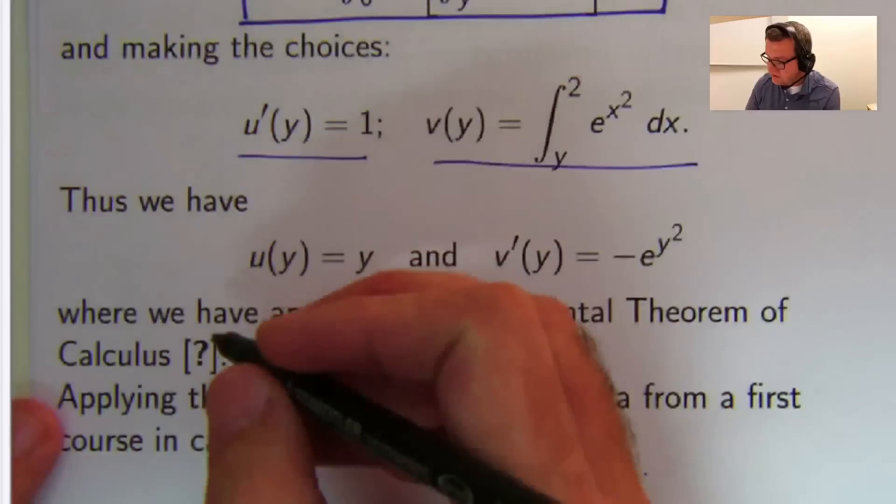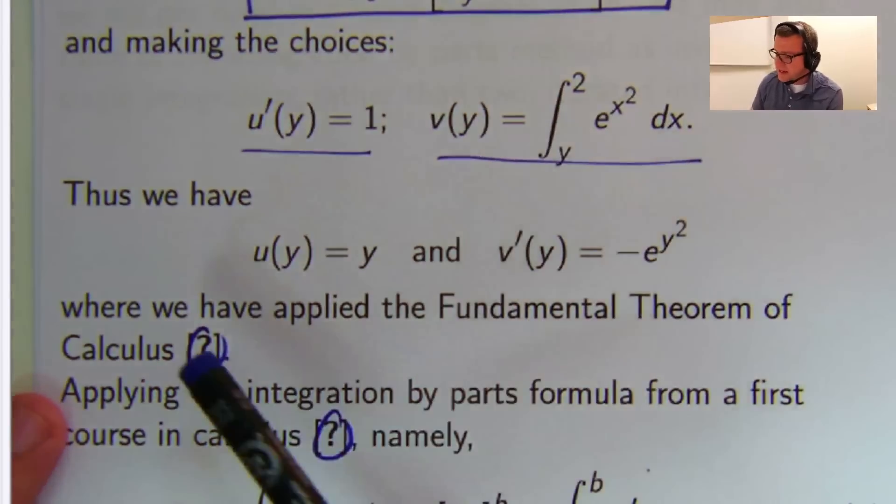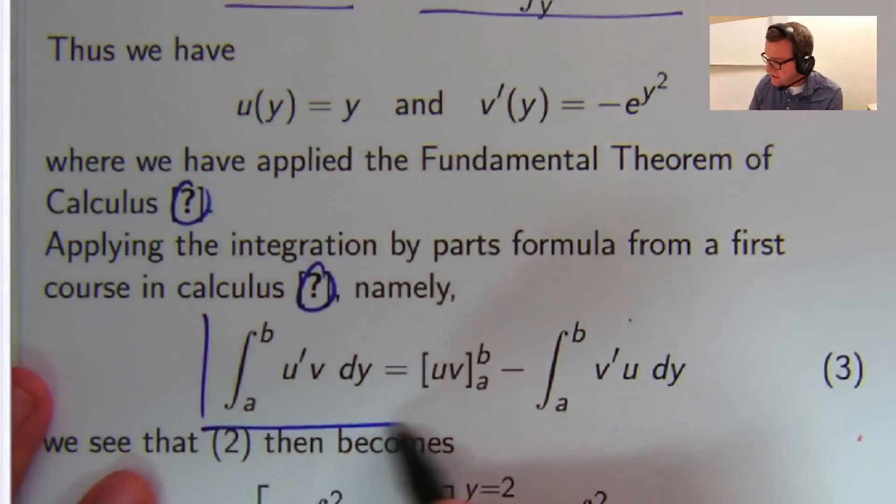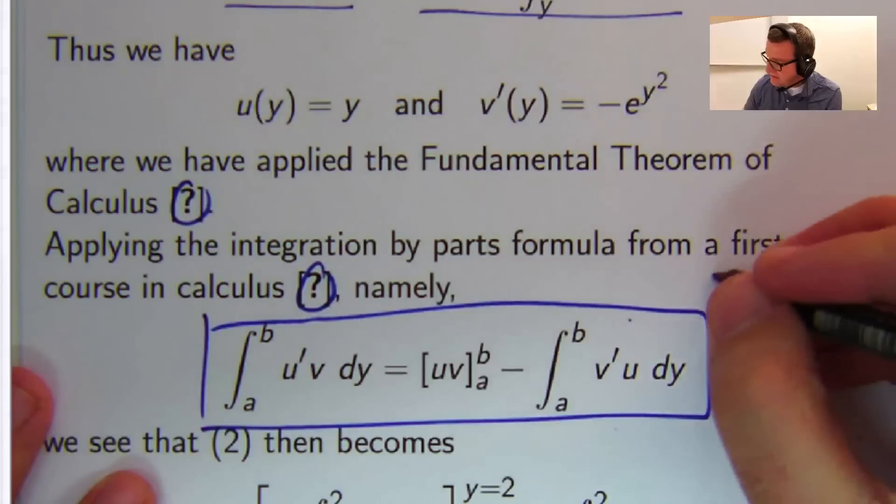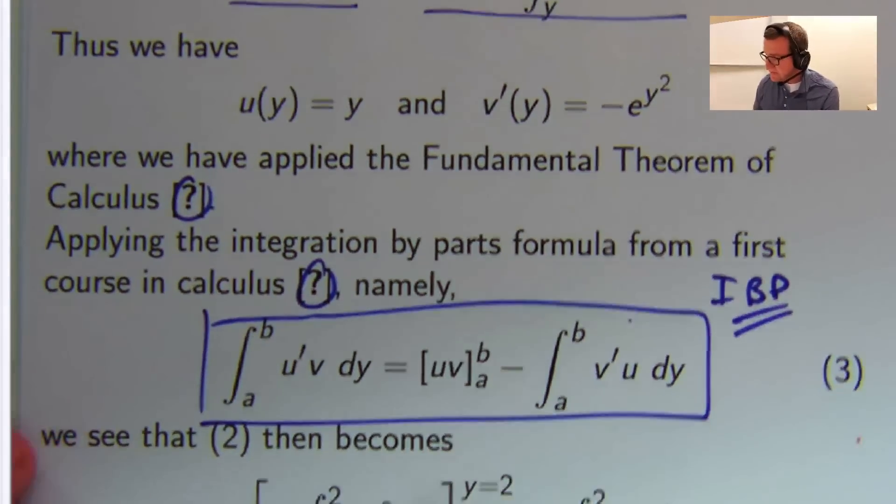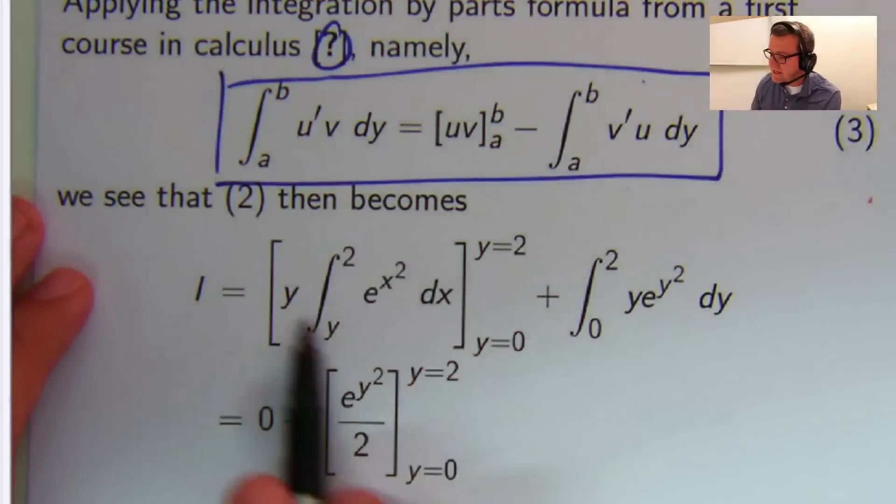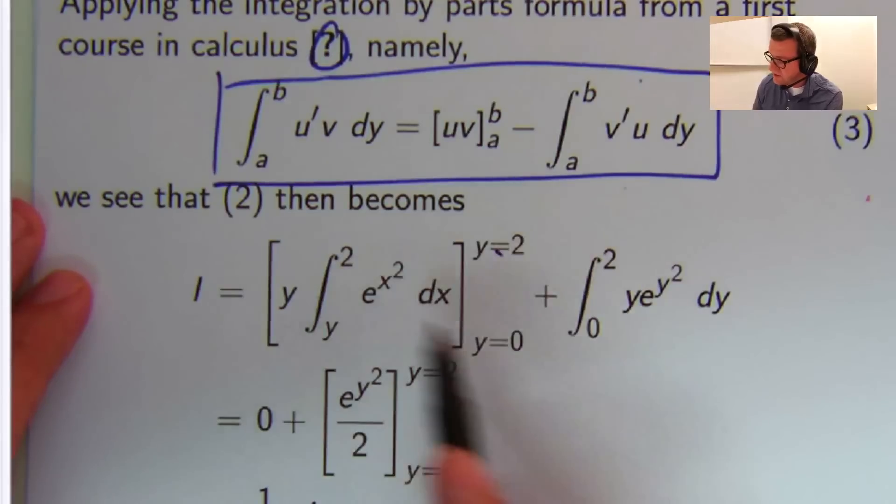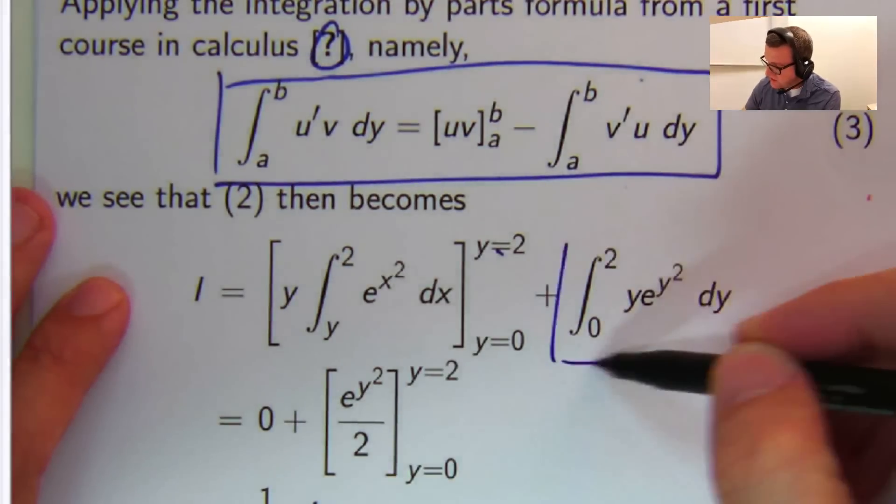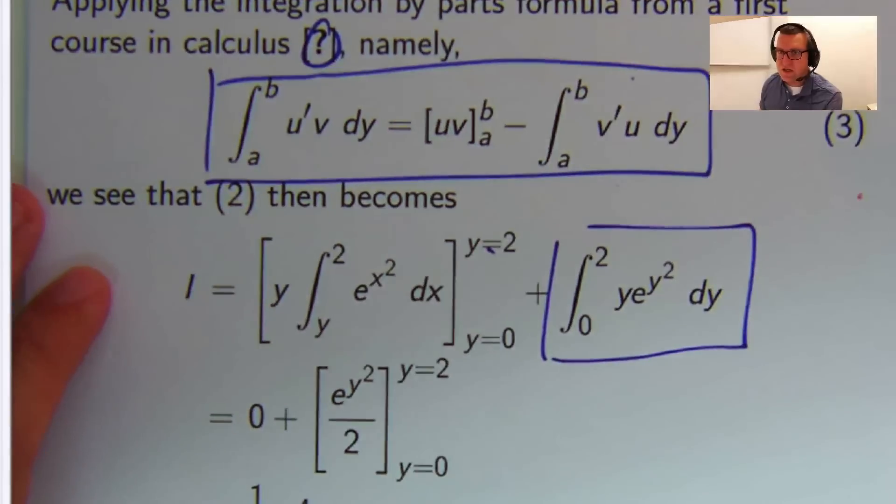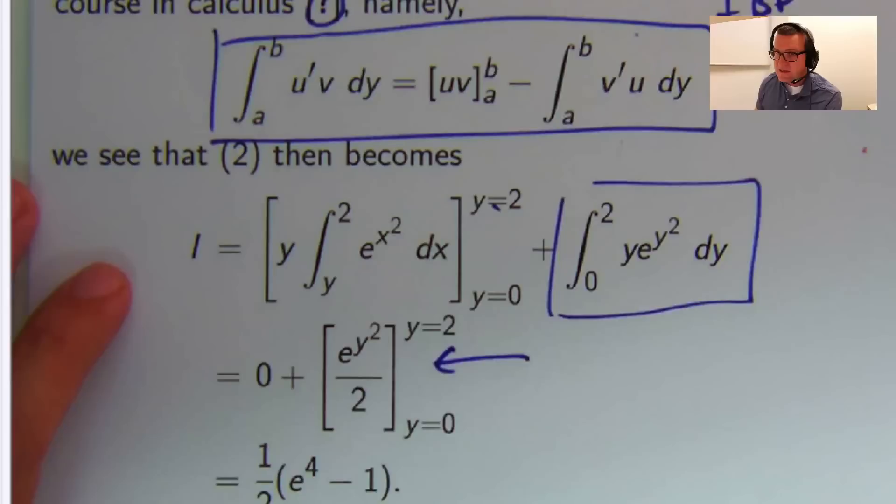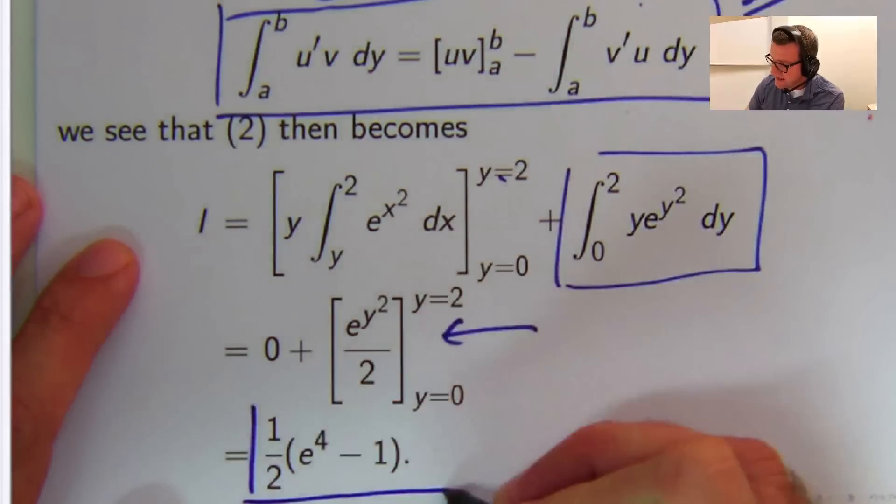So again, I've got sort of question marks here, but you can find these in any standard textbook. So you apply the integration by parts formula. And you end up with this mess here, but this becomes 0, because if you sub in y equals 2 and y equals 0, this disappears. And then you've got this integral to do, which you can just do by inspection, by the chain rule. So you end up with this as your answer.